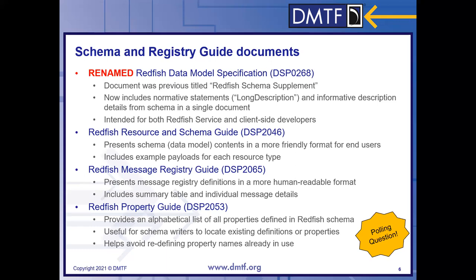The word 'supplement' was confusing to folks, so we're trying to better align it by calling it a specification, even though most of the information actually comes from the schema files themselves, which remain the source of truth. The DSP number is still 0268, so only the name has changed — though you'll see it's probably another 100 pages as all that information gets folded in together. For folks just wanting to see what to expect in those properties, the resource and schema guide continues unchanged as a much shorter document.